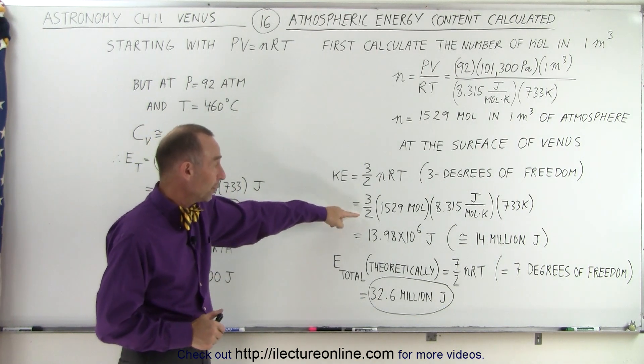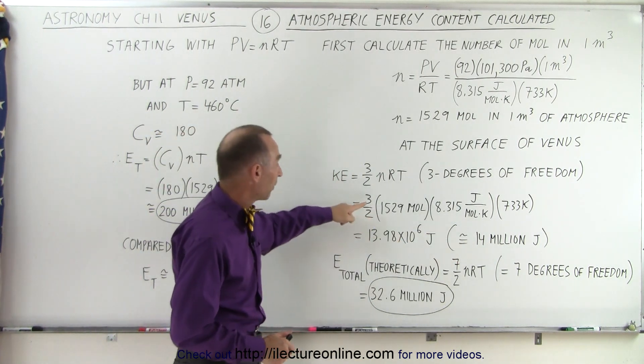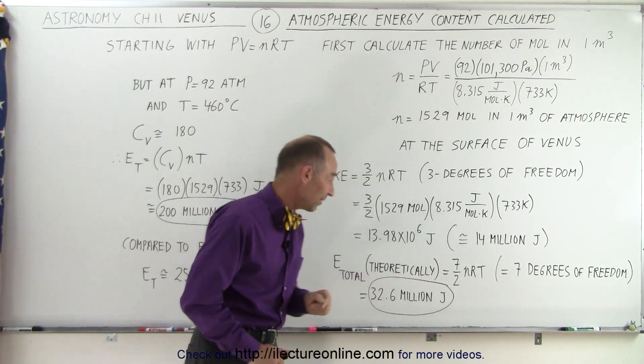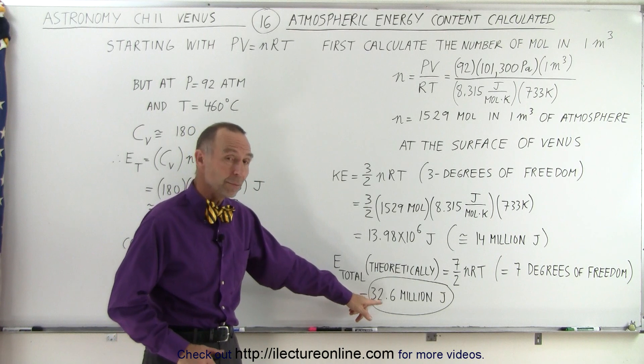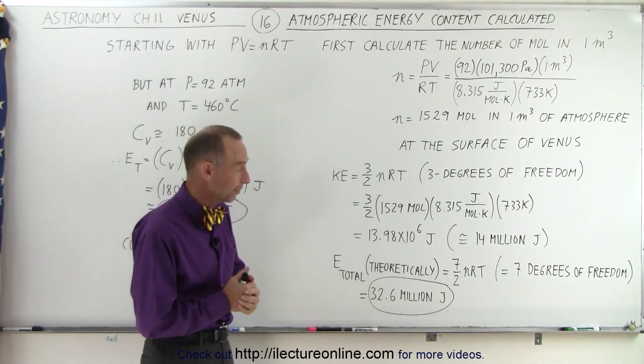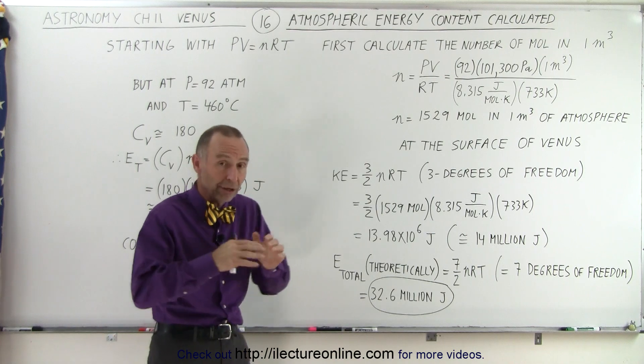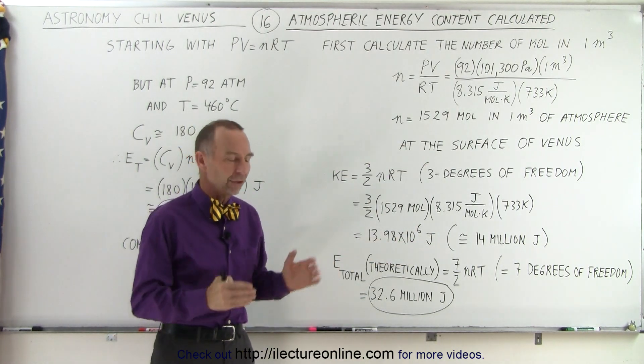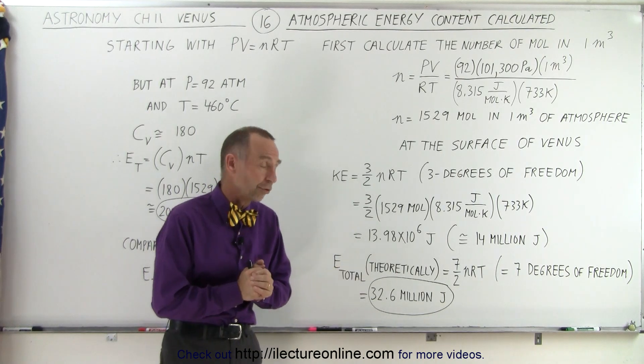When we calculate that, what we need to do is divide this number by three and then multiply it by seven. So instead of three halves, we now have seven halves. That turns out to be a little bit more than 32 million joules of energy, which is quite an amount of energy. And what we're trying to do is calculate the energy in the entire atmosphere of Venus. So we start with just one cubic meter at the surface.